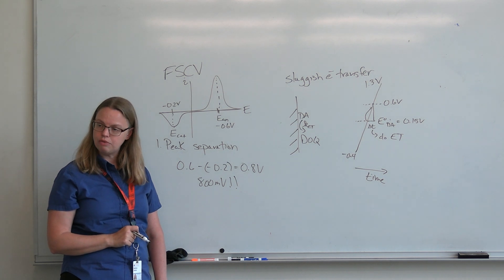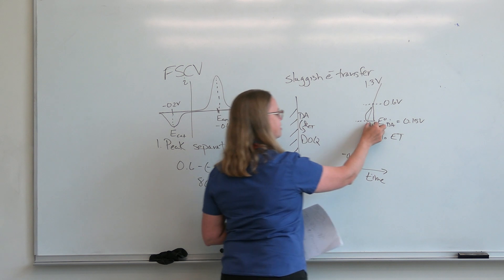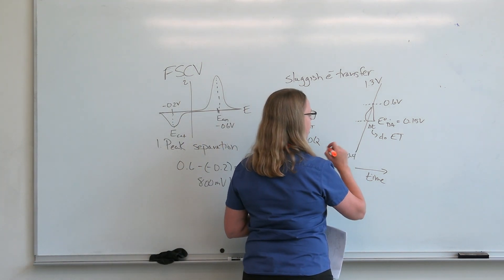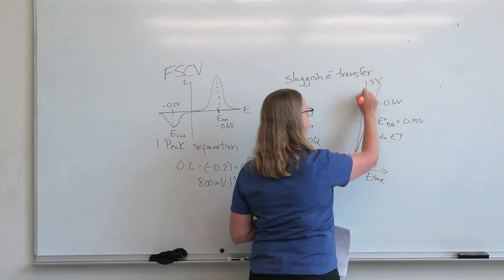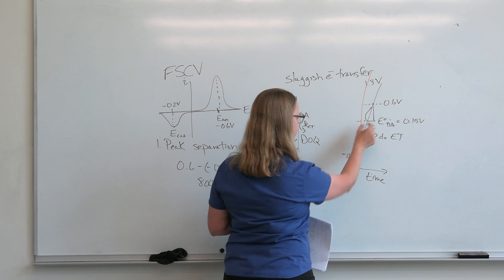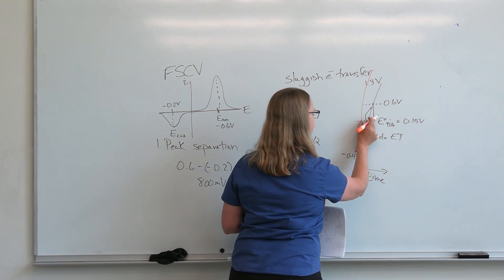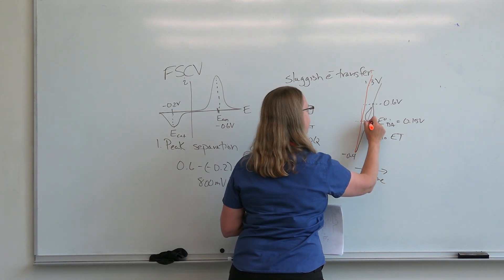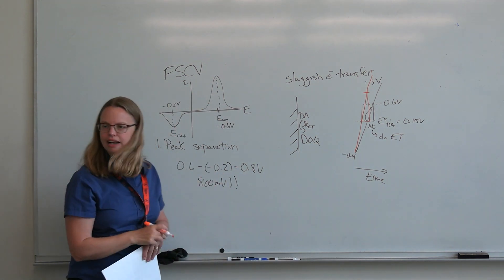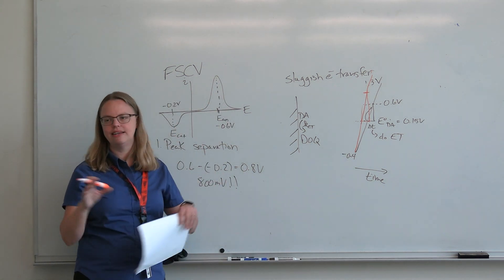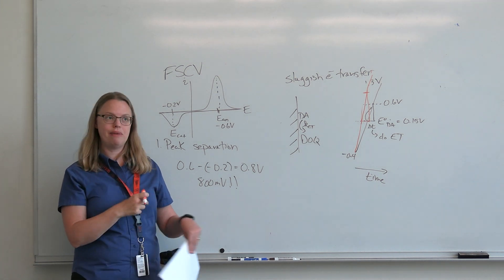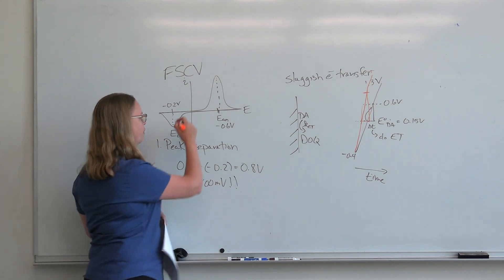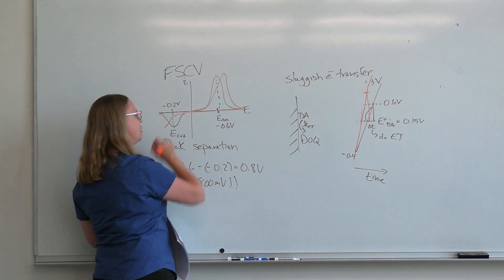The peak separation is very much dependent on scan rate. Let's say it takes a given delta-T to do the electron transfer. If I pick a different, faster scan rate, then that same amount of time now corresponds to a larger change in voltage. For example, if it took one millisecond to transfer the electron, that might have been 200mV of change; if I doubled the scan rate, it becomes 400mV. So the peaks shift out if I go to a higher scan rate.